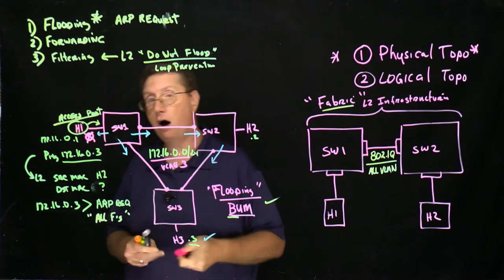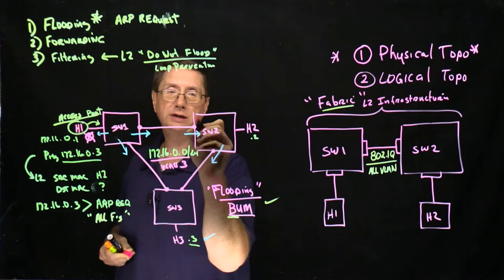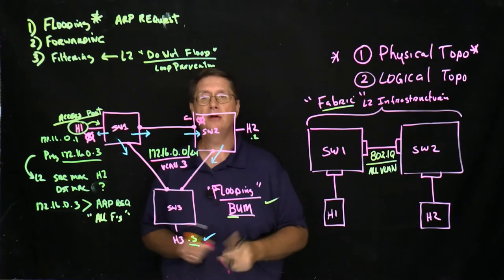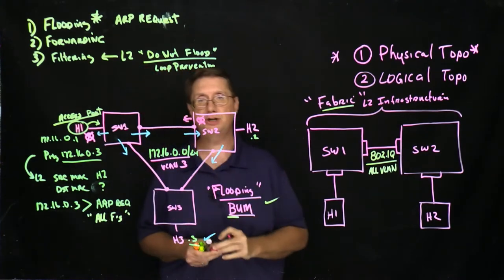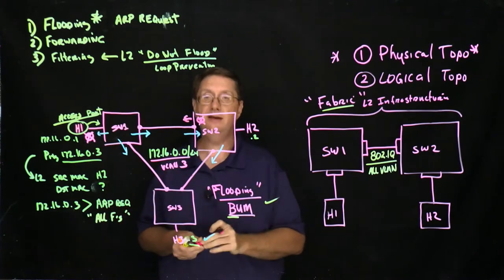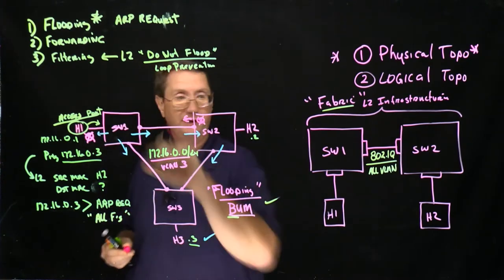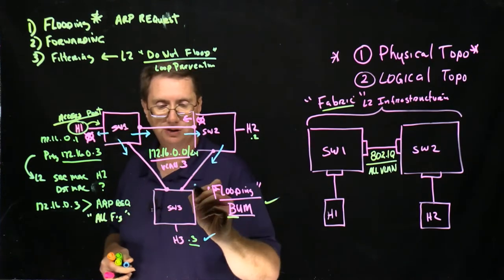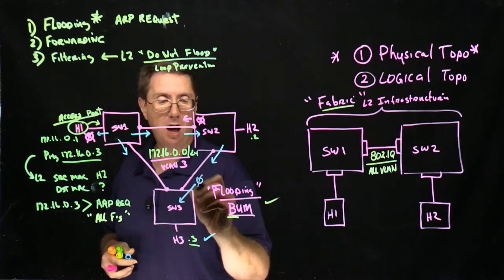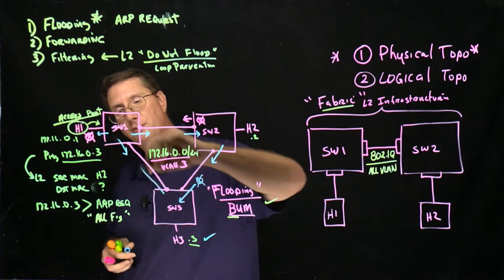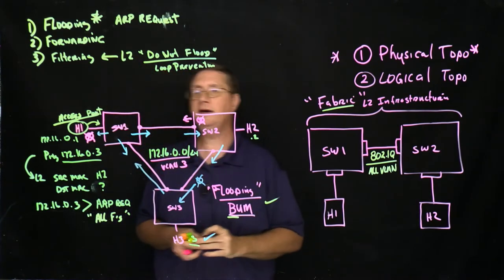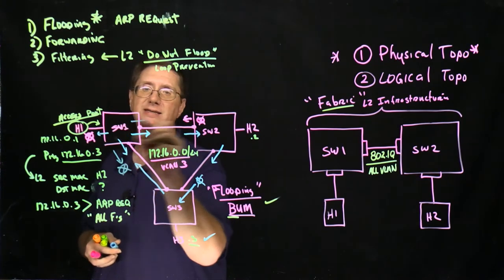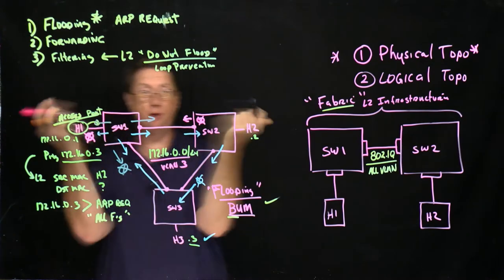but just like on SW1 going towards H1, what's going to end up happening is I'm not going to flood it out of the interface going to where it came from. You do not flood information on an interface that you learned the flood on. So that is again preventing a loop. So as we go through and we start taking a look at this, that means that this is actually going to arrive down here on switch 3. Obeying the same rules, I'm not going to send it out of the port that I learned it on, but I am going to send it out of this switch. Now when it arrives here, it's actually arriving on this port, which means I'm not going to send it out this direction, but it's important to understand that I will flood it out of both of these interfaces.